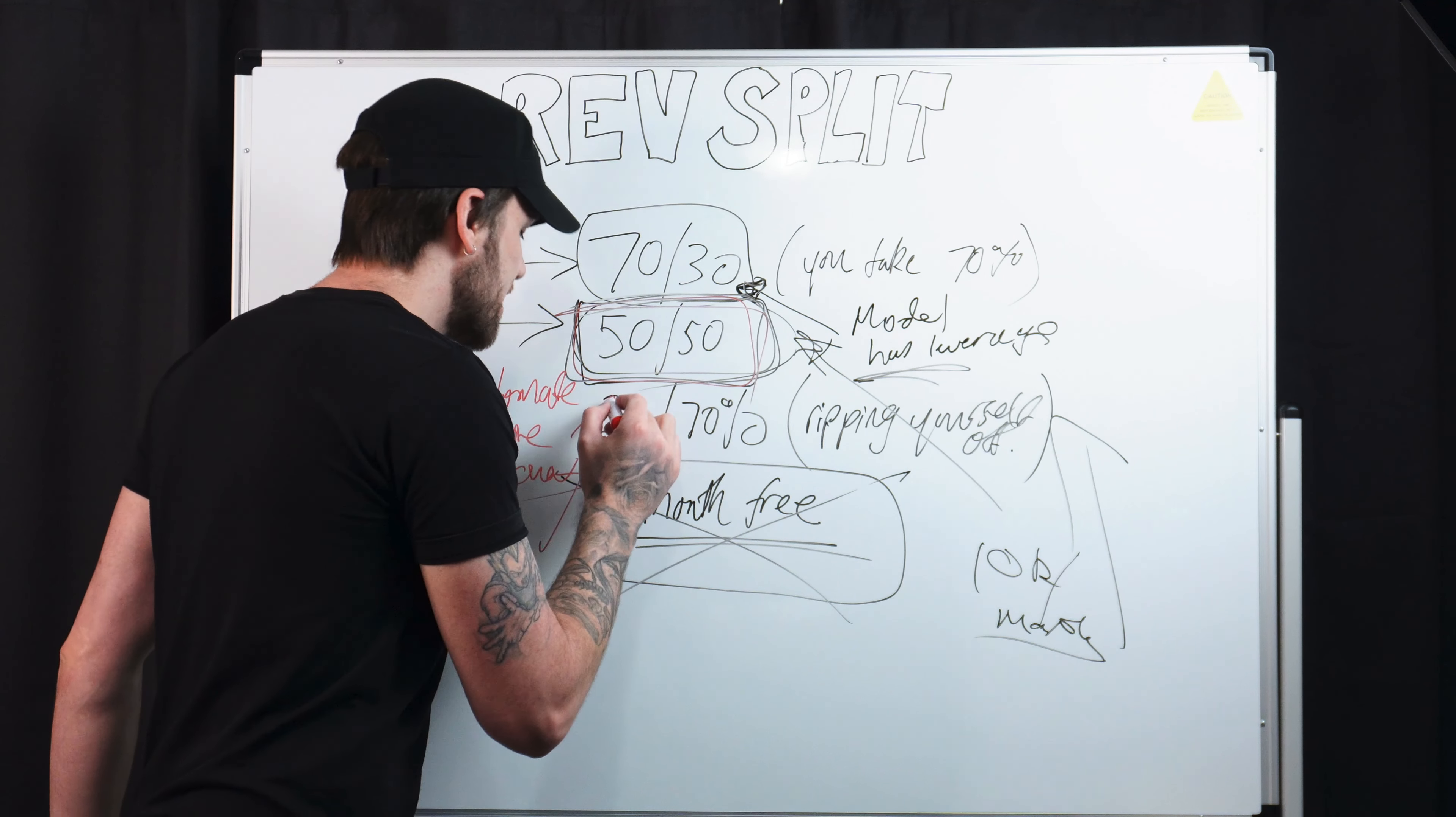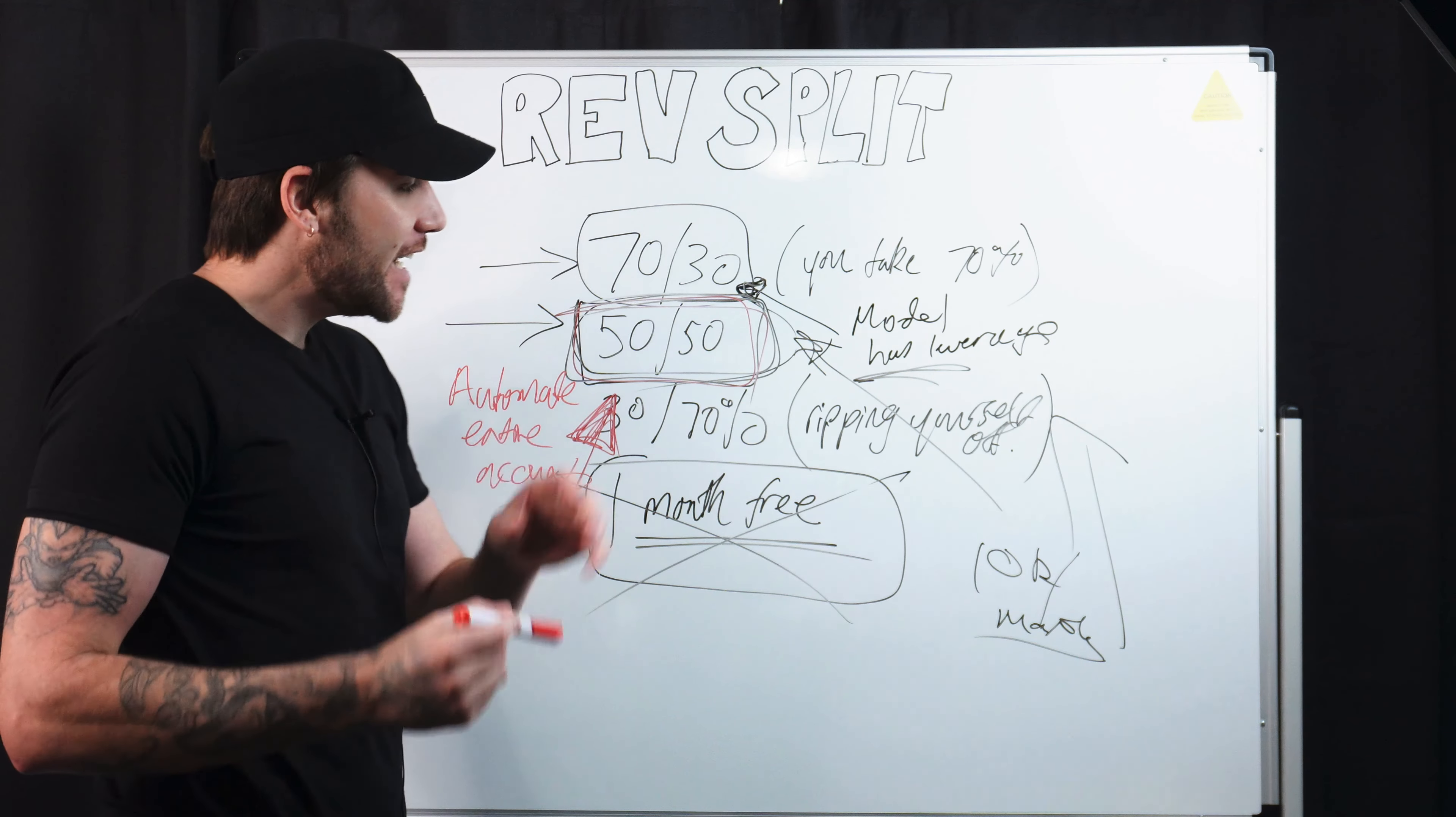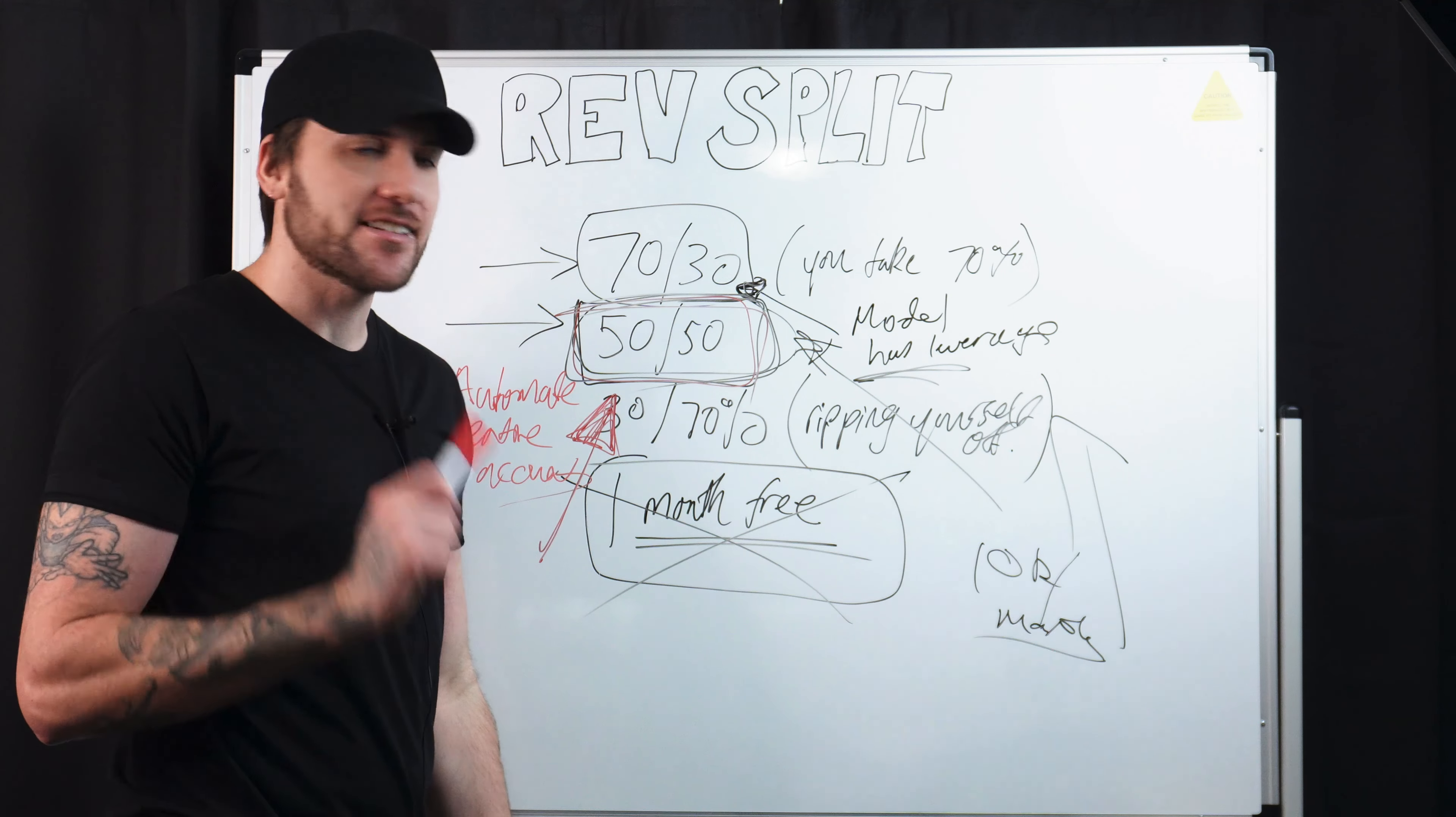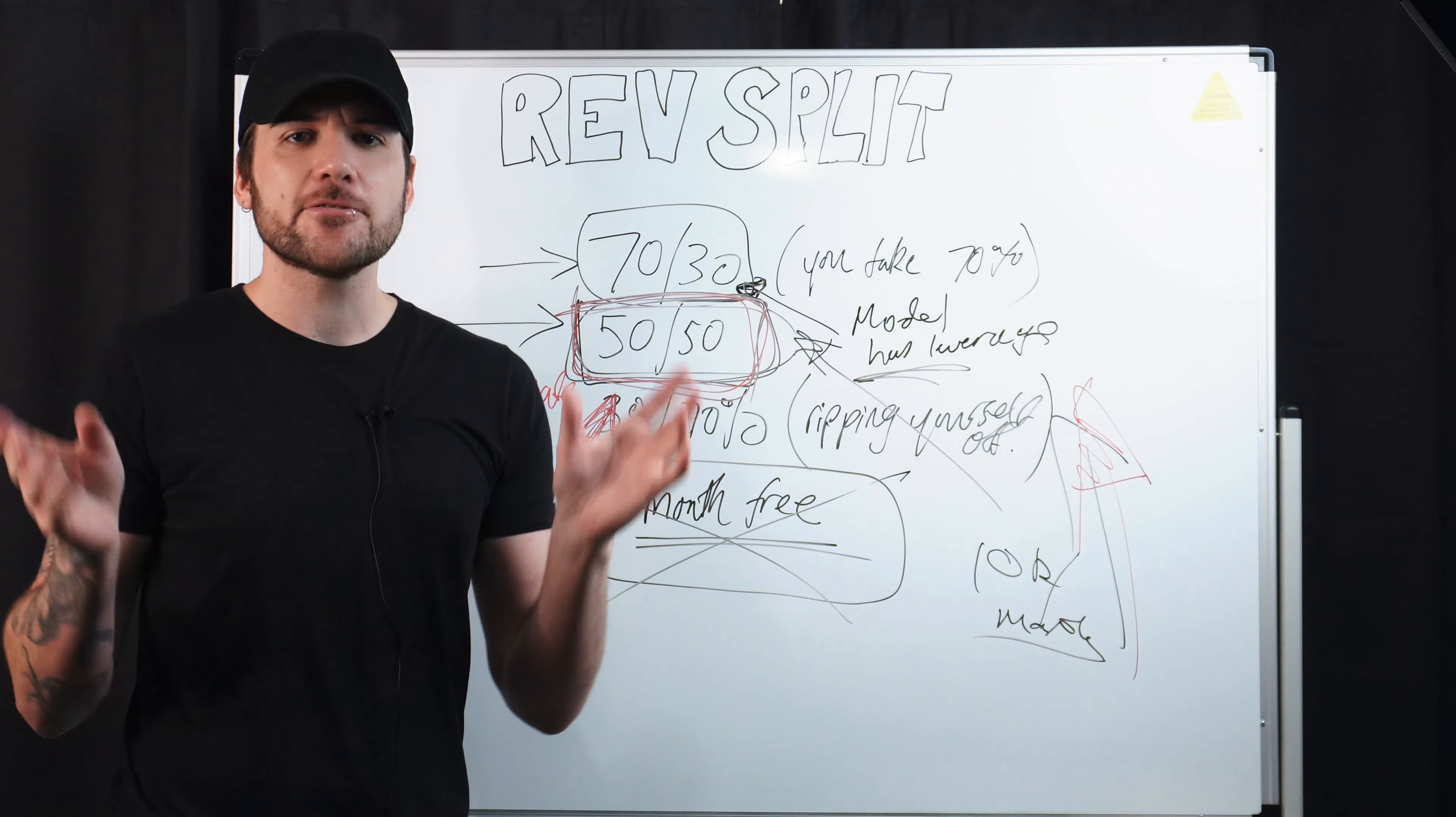I have found this the easiest to pitch when you are outreaching for the reasons I just said. And if you get any objections and a lot of models will probably object, you just say the reasons I said. This is so that we're incentivized to grow your account because if you don't make money, then we don't make money. And that's all I have for you today.